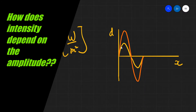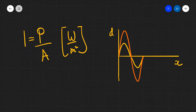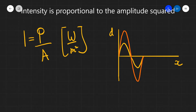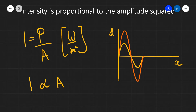Now how does the intensity depend on the amplitude? Let's have a look at our second formula for intensity. It turns out that intensity is proportional to the amplitude squared of a wave.